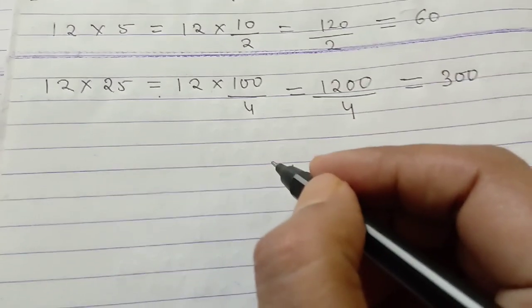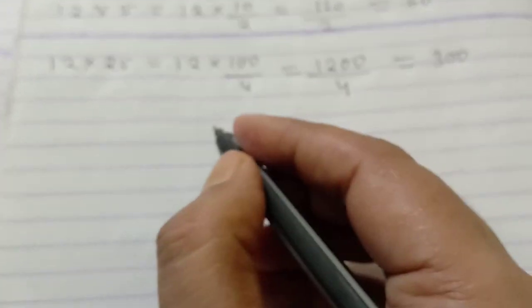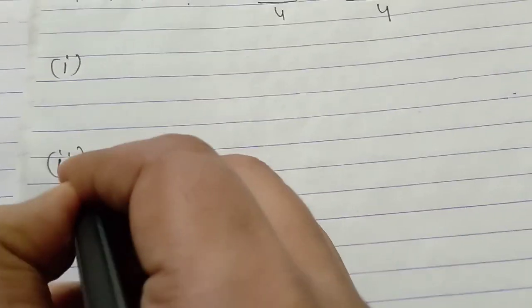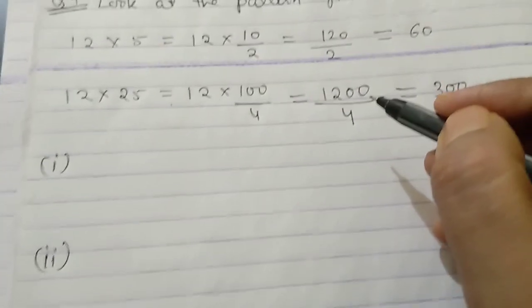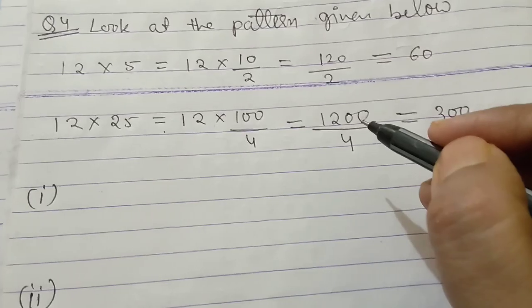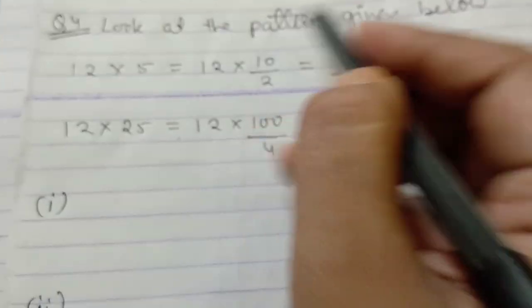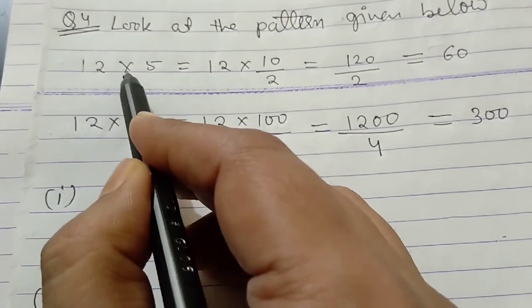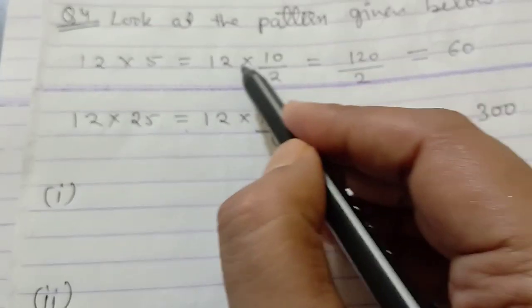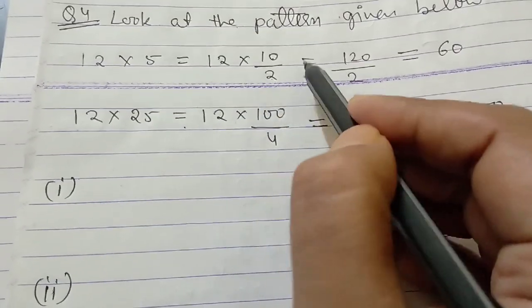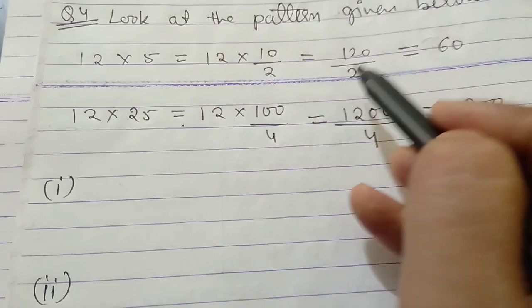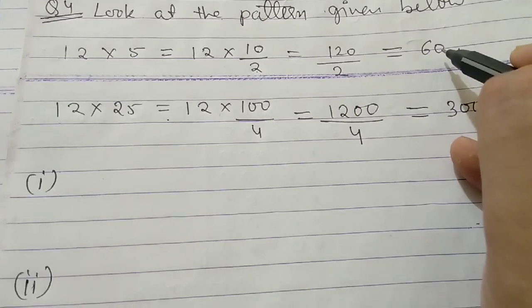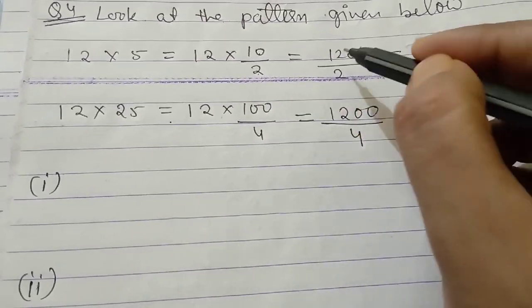In the same way, we will have to follow the question number 1 and question number 2. I will repeat the whole thing so that you can know better. Look at the pattern given below. It has been given in the question. 12 multiplied by 5 equal to 12 multiplied by 10 by 2 is equal to 120 divided by 2. Then, if we find the solution, you will get 60. According to the pattern, we have to follow the same.